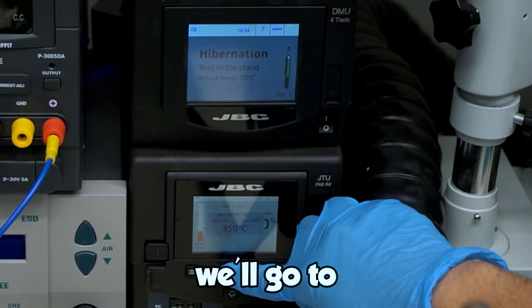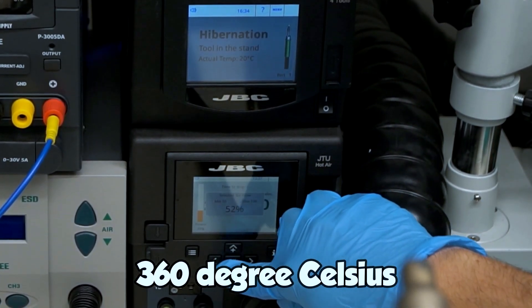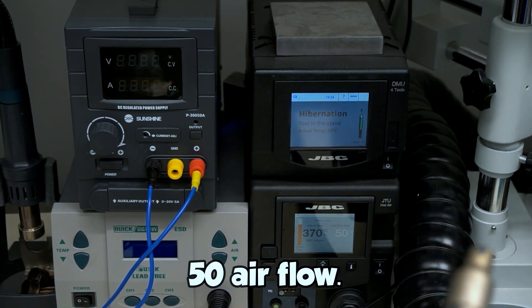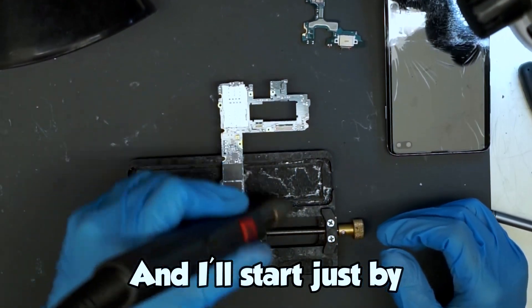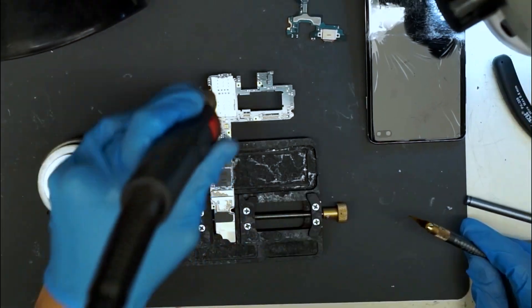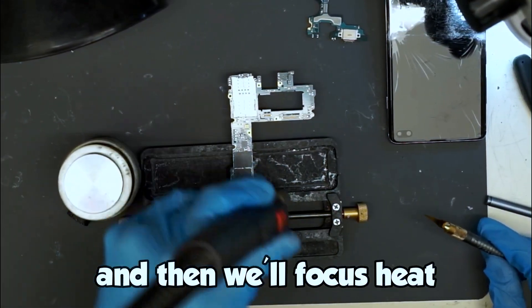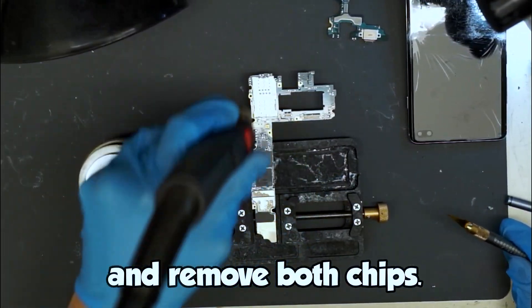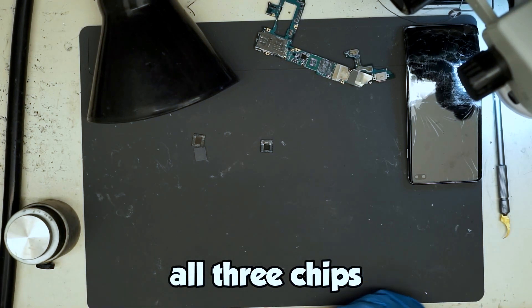So for removal, we'll go to 360 degrees Celsius, and we'll leave it at 50 air flow. And we'll start just by preheating. Preheat the entire board, and then we'll focus heat and remove both the chips. Alright, all three chips are removed.